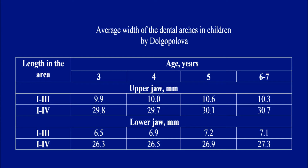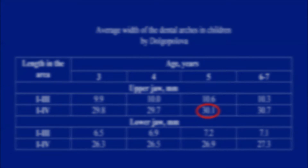These values are compared with the table data in accordance with the sum of incisors. For example, the general length of the dental arch in a 5-year-old child equals 29 mm, while the table value is 30 mm. Thus, one can conclude that the dental arch is shortened.